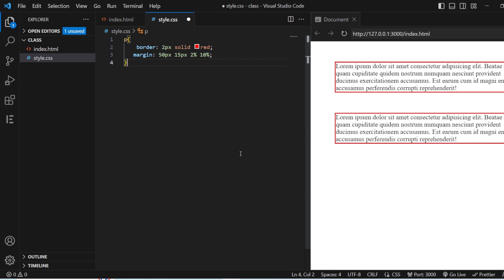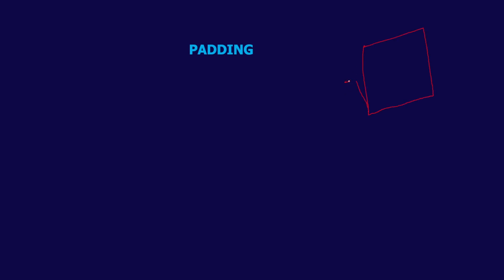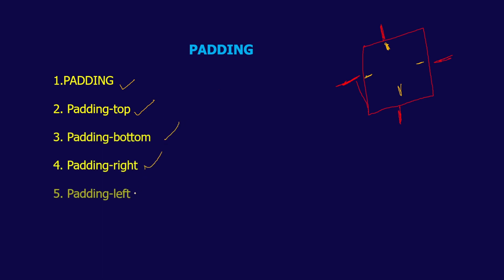Now let us see about the padding properties. Just like margin properties — which are applied outside the paragraph — the padding property is applied inside that particular paragraph or tag. You have padding-top, padding-bottom, padding-right, and padding-left. You can add padding to any tag. Let us see this in Visual Studio Code.